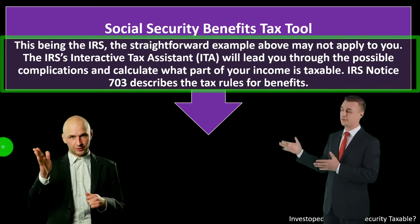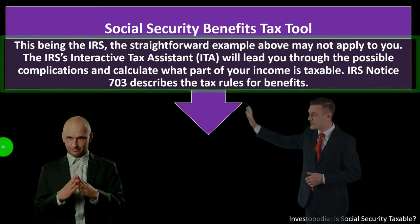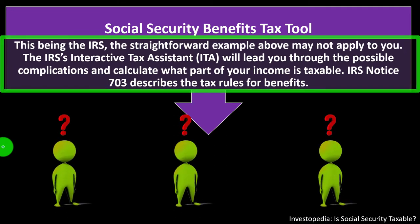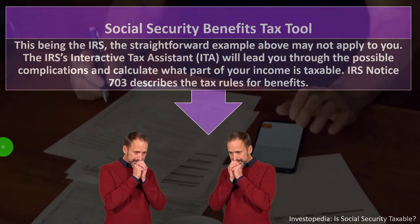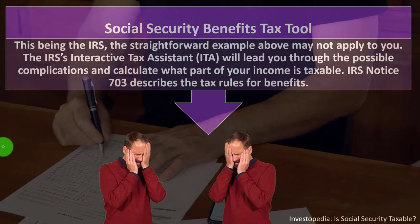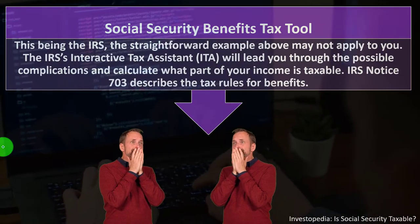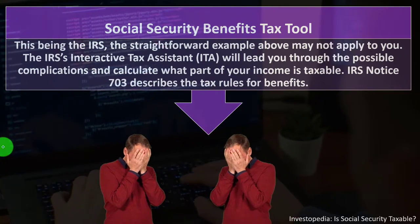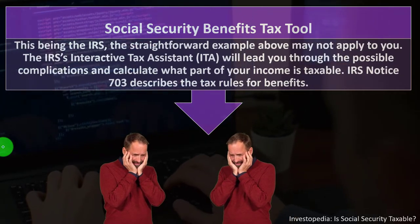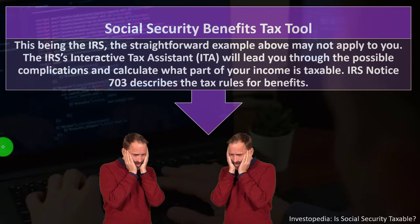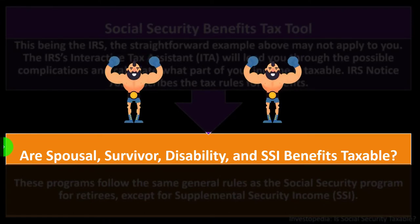The IRS's Interactive Tax Assistance (ITA) tool will walk you through possible complications and calculate what part of your income is taxable. IRS Notice 703 describes the tax rules for benefits. The easy answer is that up to 85 percent of your income could be subject to tax above a certain threshold. For more precise calculations, tax software is highly recommended — or you can visit the IRS website for their resources and tools.